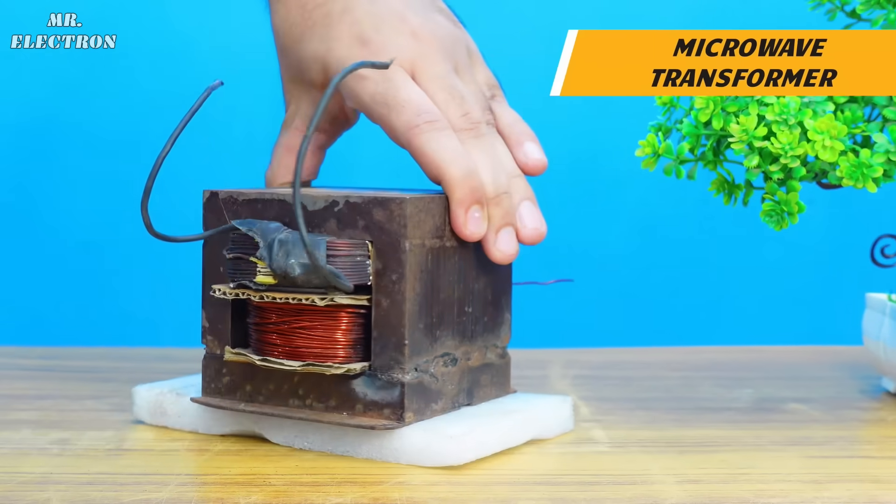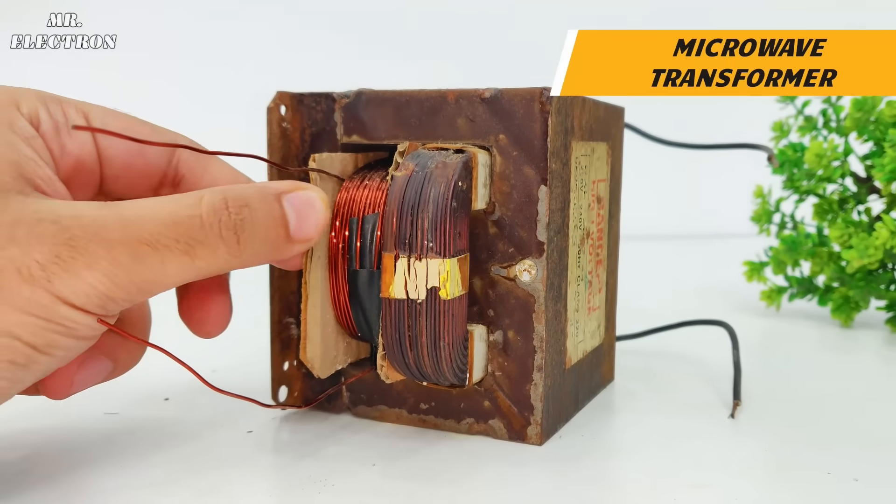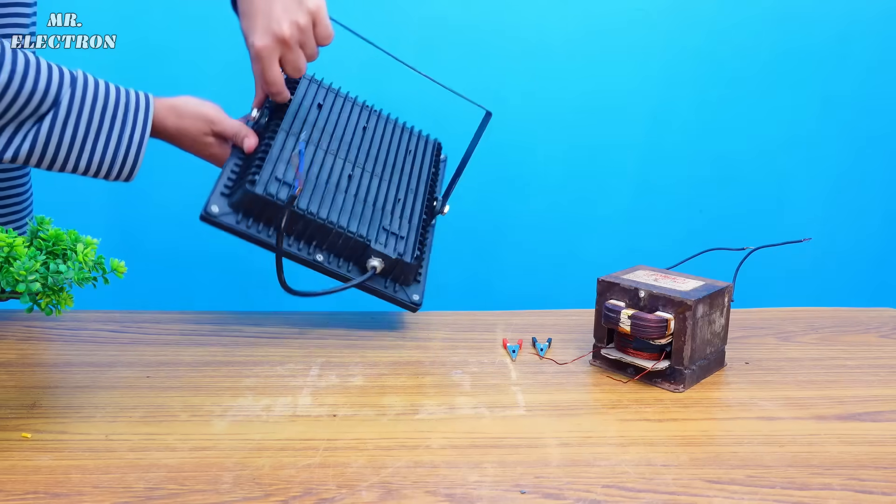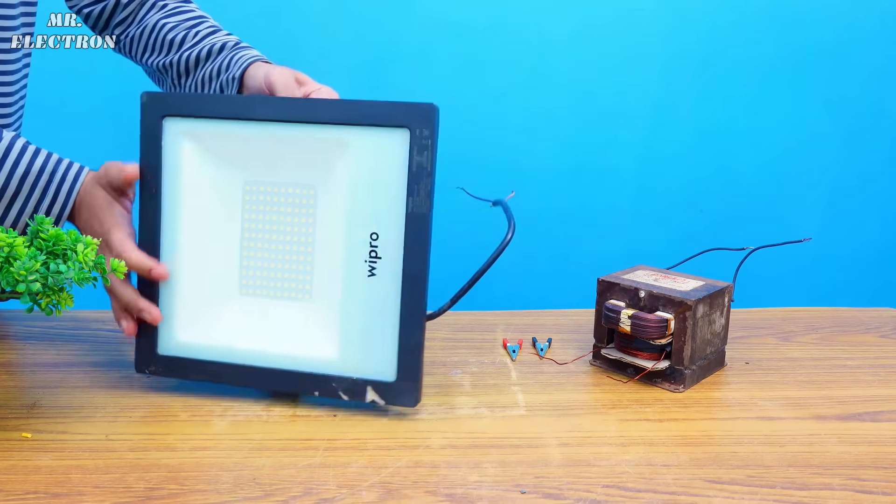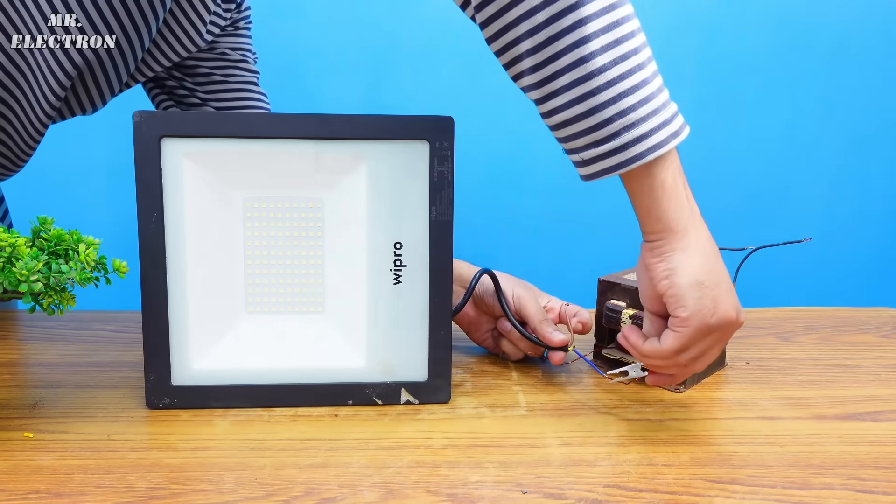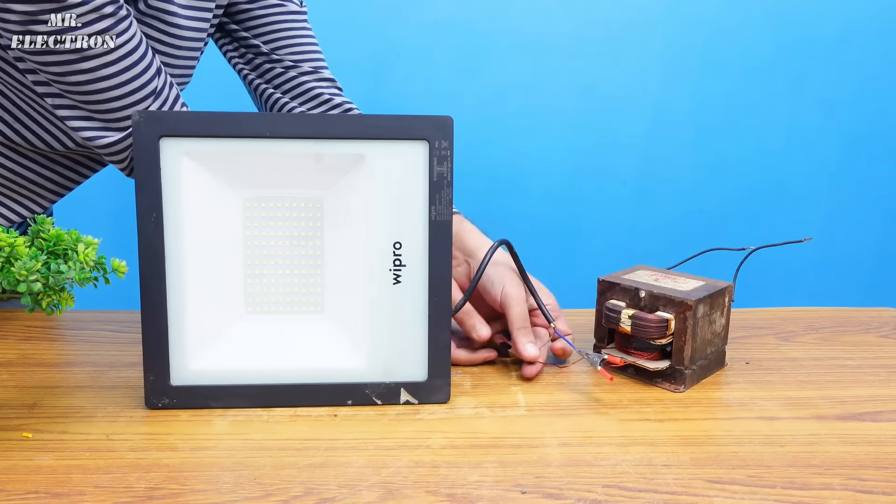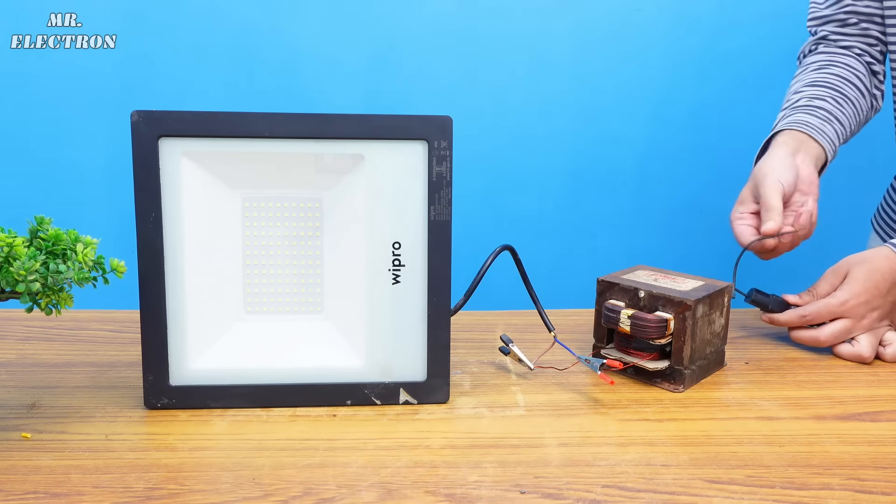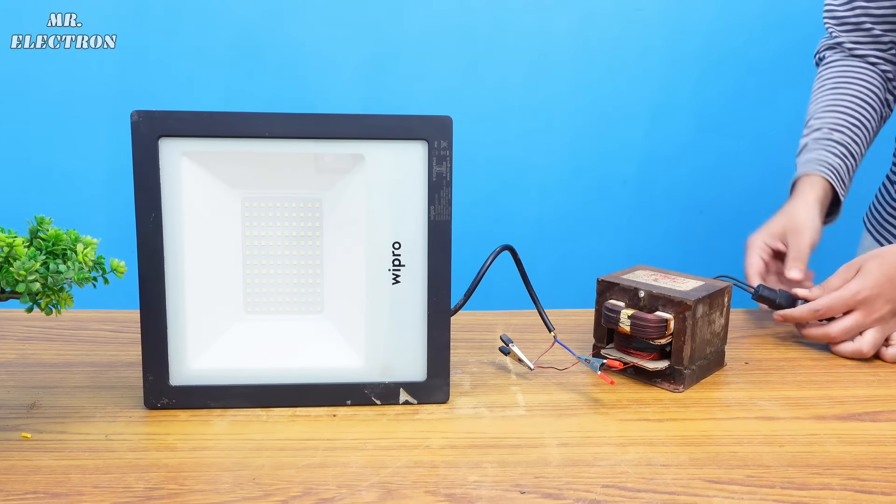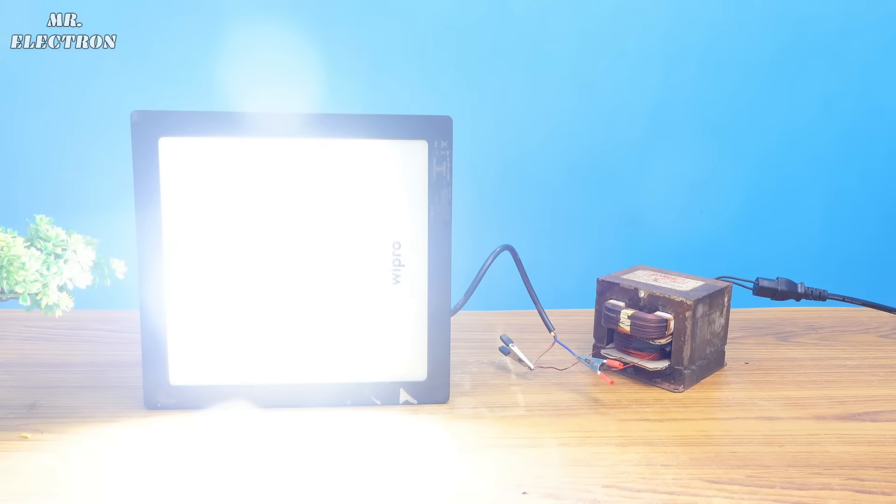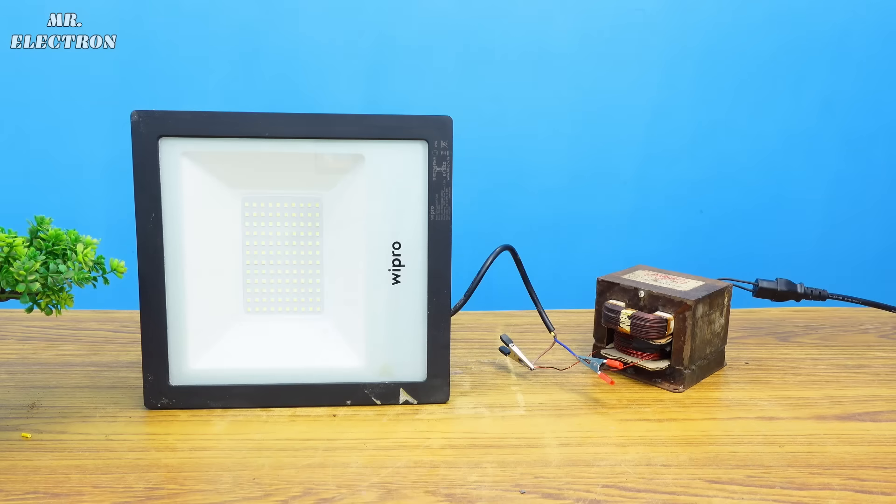This is a microwave transformer that has been modified. Many times we need to run 110 volt appliances and we have 220 volts AC from our home socket. In that case, this modification helps because it is a step-down transformer which converts it to 110 volts AC.